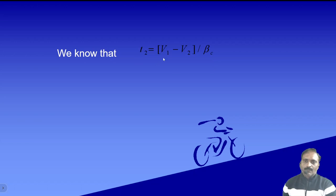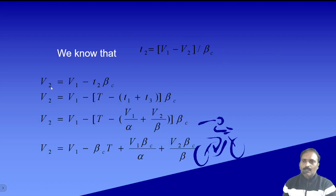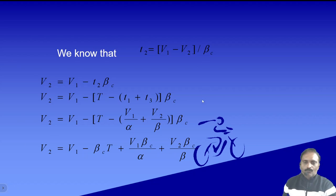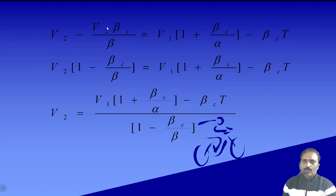Similarly we derive a second equation. From t2 = (v1 - v2)/beta-c, we get v2 = v1 - t2·beta-c. Writing t2 = T - (t1 + t3) and substituting t1 = v1/alpha, t3 = v2/beta, then collecting v2 terms on the left-hand side, we get v2(1 - beta-c/beta) = v1(1 - beta-c/alpha) - T·beta-c. Finally we get the equation for v2 in terms of v1. These two equations allow us to find the unknown parameters in the quadrilateral speed-time curve.